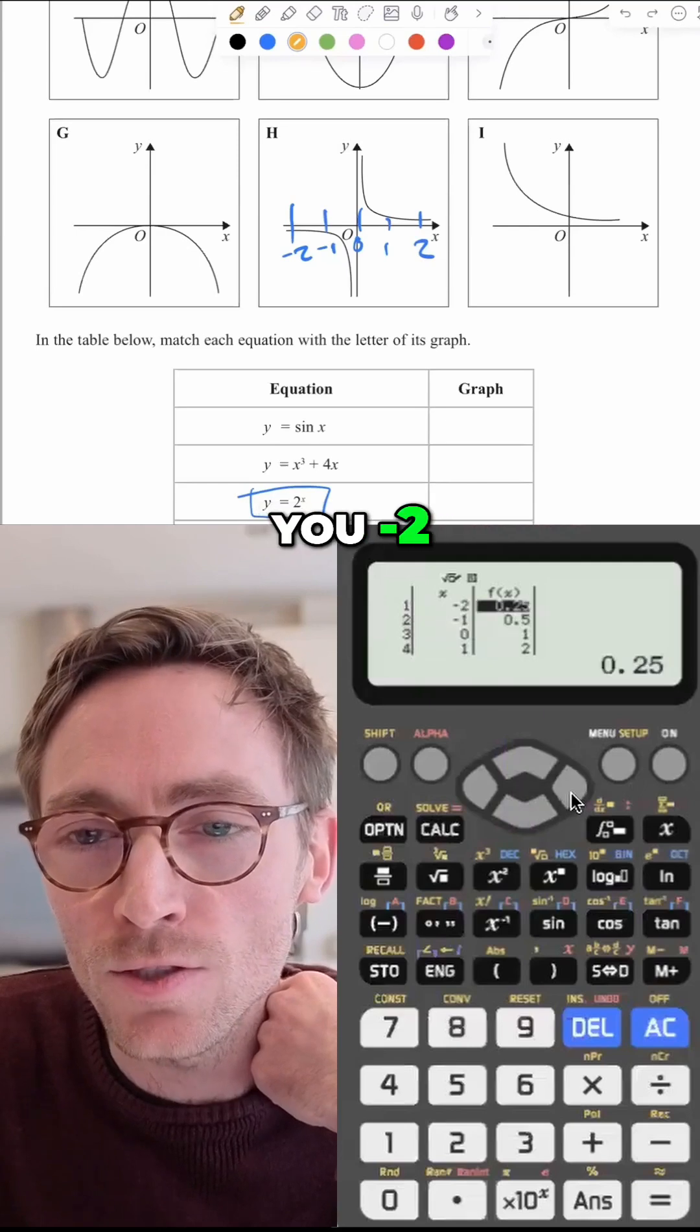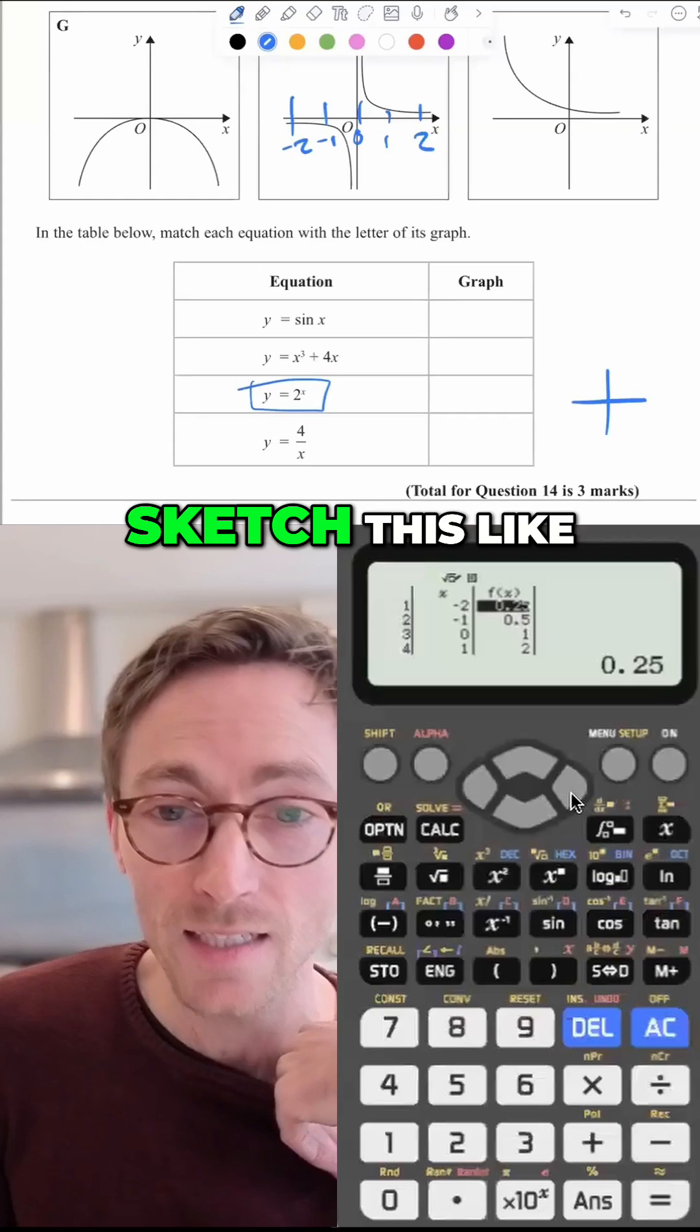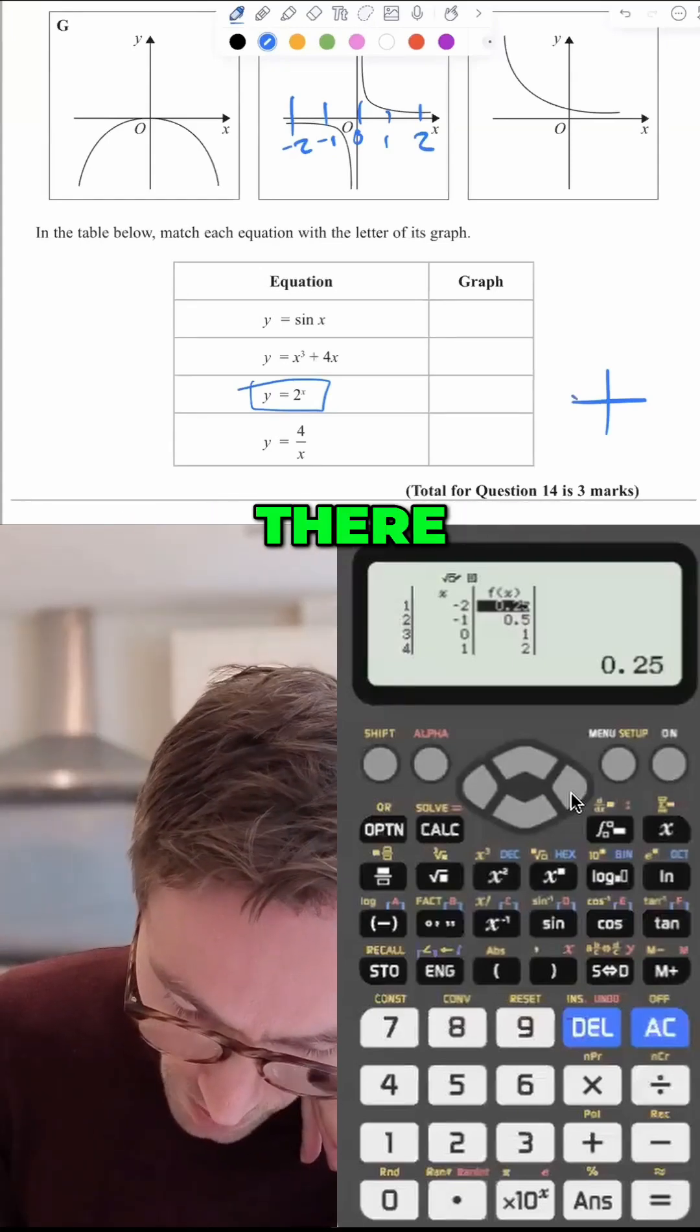So this tells you minus two, 0.25. So what this is telling me for this graph here, and I could even sketch this, is at minus two, it's just positive. So it's kind of there. It's really small.